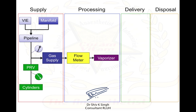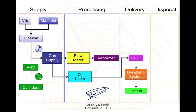In the machine, these gases are processed via the flow meters where the controlled flow can be delivered. There is also an oxygen flush that bypasses the flow meter and vaporizers, and the oxygen is delivered directly to the common gas outlet or CGO. In the delivery system, the gases are then delivered to the patient with a breathing system which is interfaced between the machine and the patient. The gases which are not required by the patient or which need to be vented out are disposed of using a scavenging system.